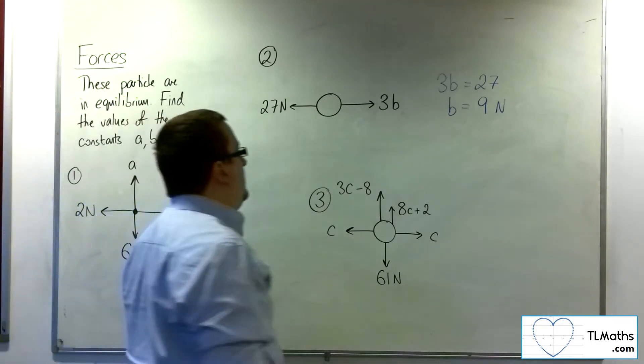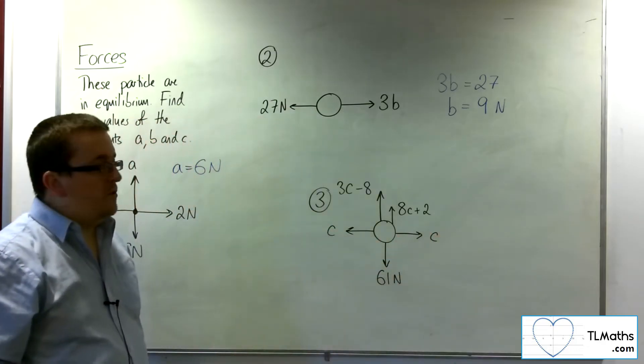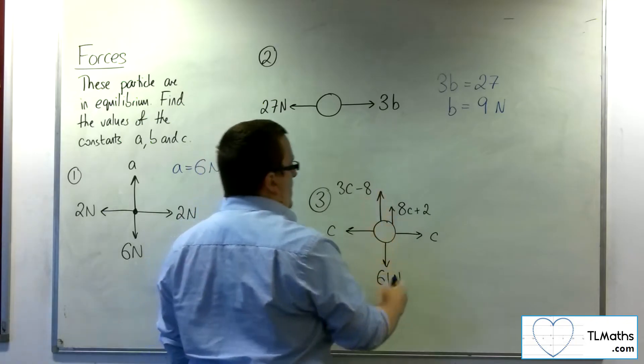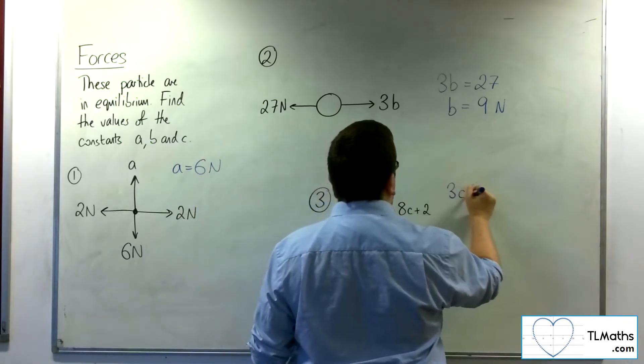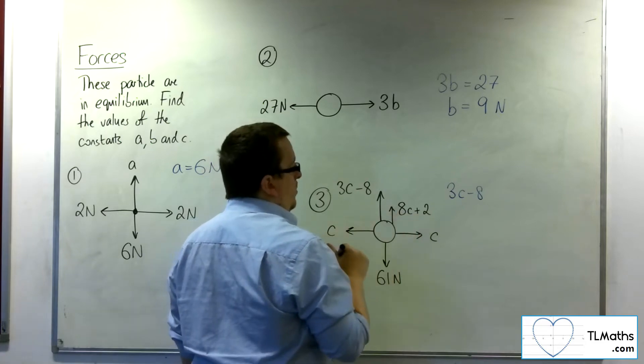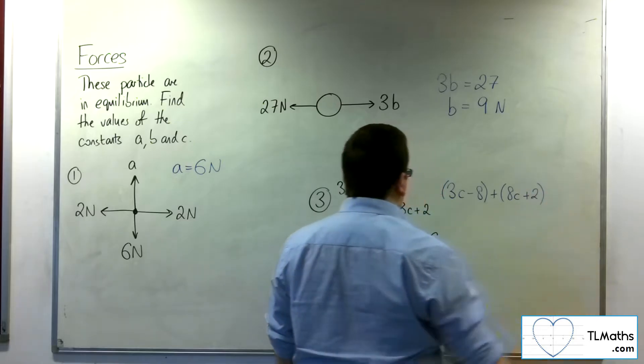And then this final one, well, we can see that c must cancel each other out horizontally, so we don't need to worry about those. But these must cancel each other out. And so 3c minus 8 plus 8c plus 2.